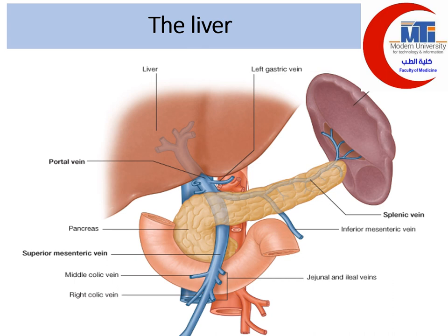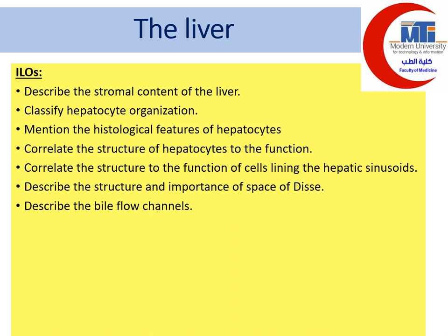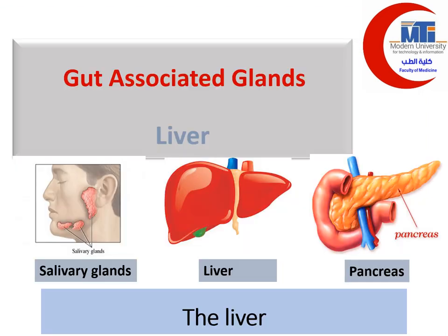Assalamu alaikum warahmatullahi wabarakatuh. Today we are going to discuss the second gut-associated gland, which is the liver. By the end of this lecture, you will be able to discuss the liver in many points: describe the stromal content, know that the liver cell is called hepatocyte, classify hepatocyte organization, give histological features of hepatocytes, and correlate hepatocyte structure to function.